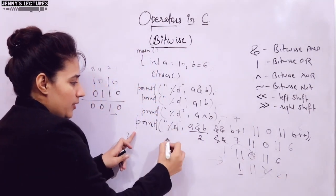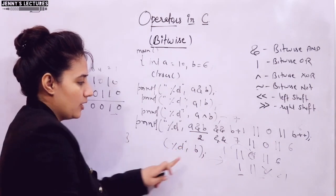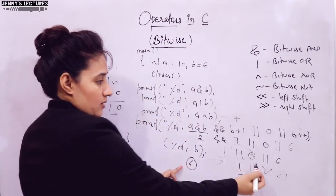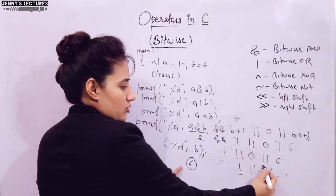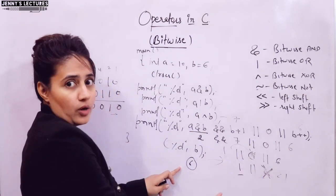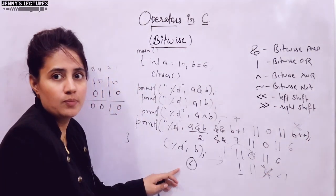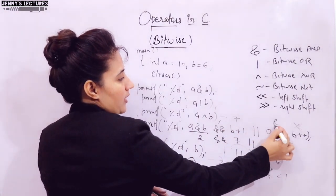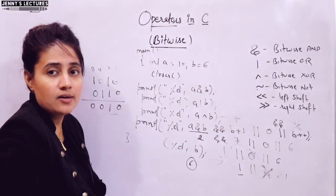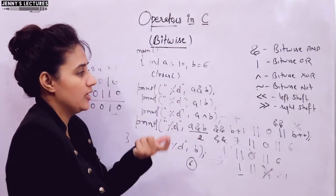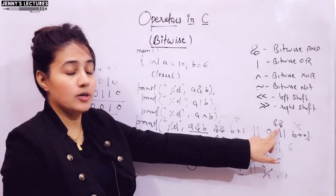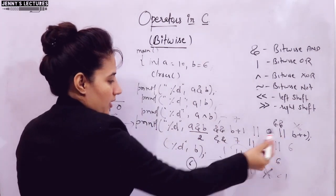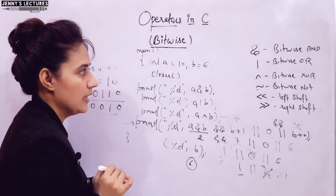Because the first operand of logical OR was 1, the second operand (B++) was never executed due to short-circuit evaluation. So if you print B after this, you will get 6, not 7 — because the B++ expression was not executed. If you replace OR with logical AND, then you might get B incremented to 7. You can tell me in the comment box: what output would you get for the statement, and what value would B have?